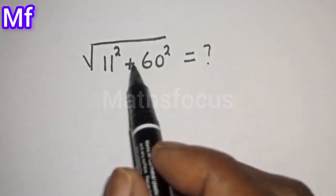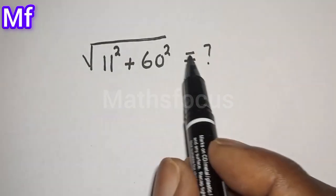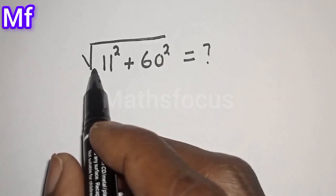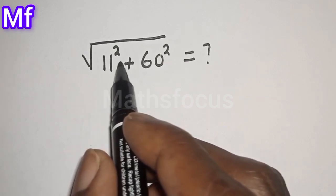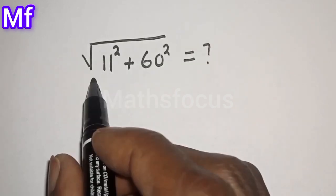Square root of 11 squared plus 60 squared is equal to what? We quickly want to evaluate this nice radical problem.